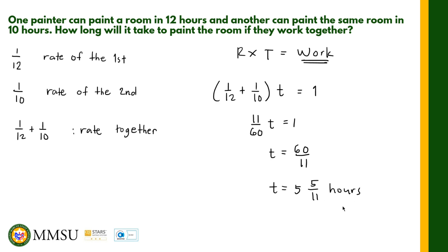Since 5/11 of 60 minutes is approximately 27.27 minutes, the time is approximately 5 hours and 27 minutes. So if they work together, the combined rate is just the sum of their individual rates. That's how you solve a work problem.